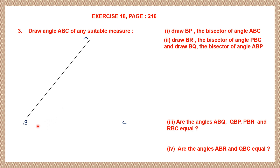To do this, take your compass and place the needle at the vertex of this angle, that is at point B, and draw an arc. The arc cuts the arms of angle ABC at two points. Let's name the point of intersection as D and the other as E. So this is the first step.